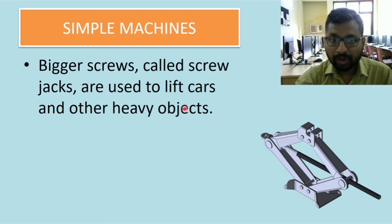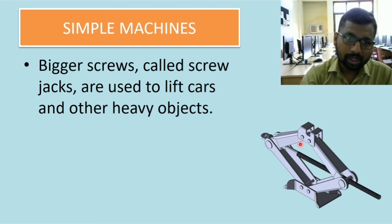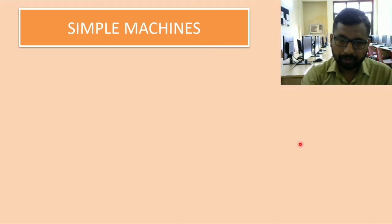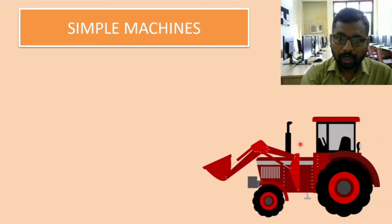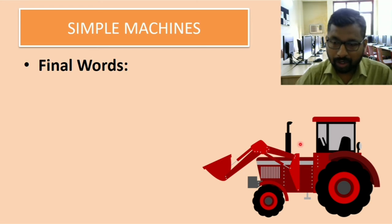Bigger screws called screw jacks are used to lift cars and other heavy objects. You must have seen this whenever you want to change the tires of the vehicle. We use such kind of screw jacks. So this is a kind of screw machine.